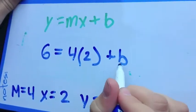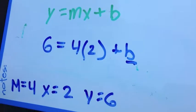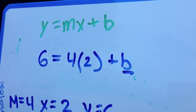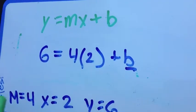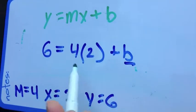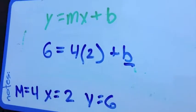In this case, we're trying to find what b equals so we can go ahead and plug it all back in. Since 6 equals 4 times 2, you need to find that equation. 4 times 2, do you know what that is? 8. Good.